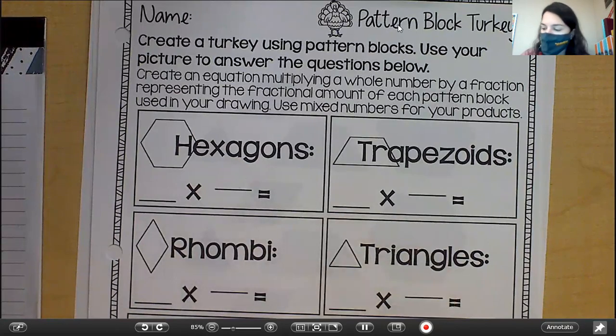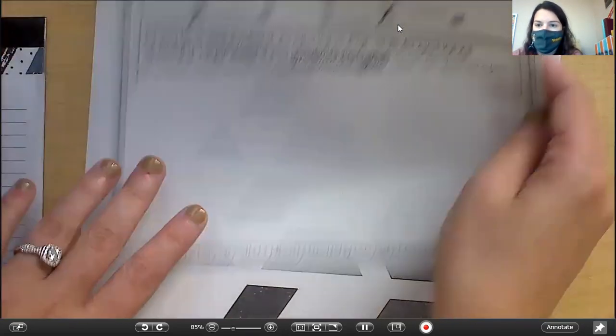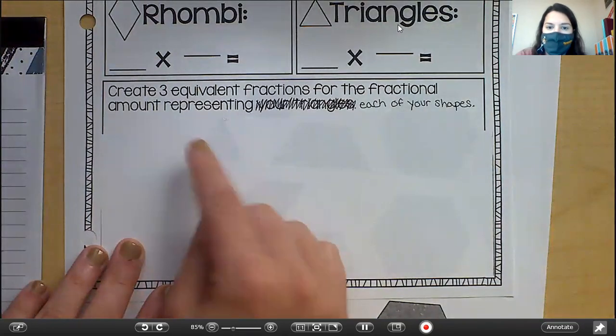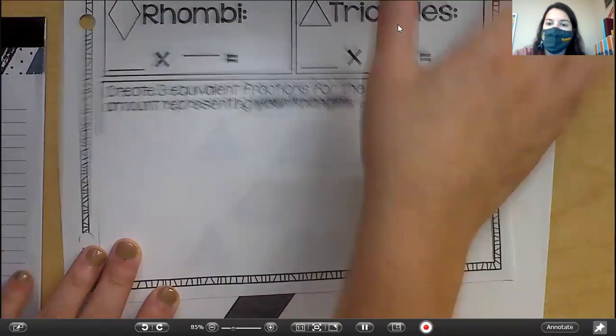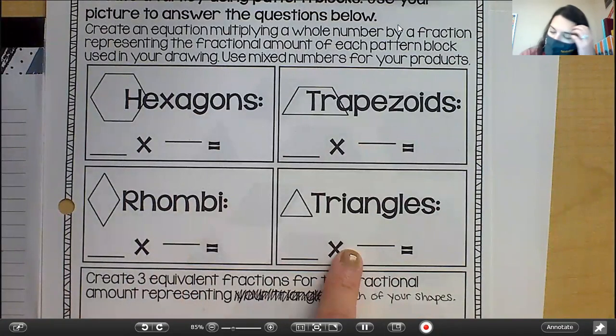You'll do that for each of your pattern blocks. And then at the very bottom, you will create three equivalent fractions for the fractional amounts representing each of your shapes. So you'll do three equivalents for hexagons, three for trapezoids, three for rhombi, and three for triangles.